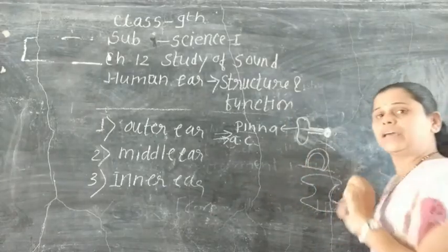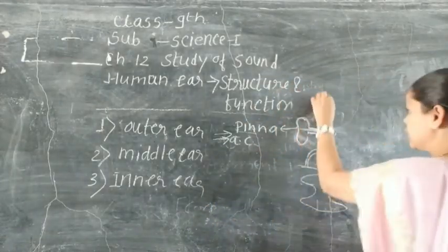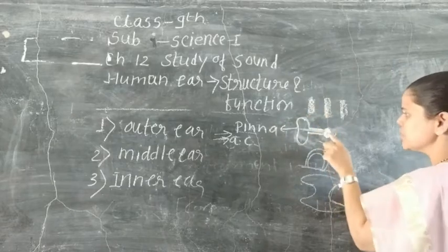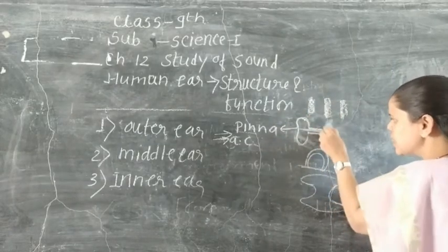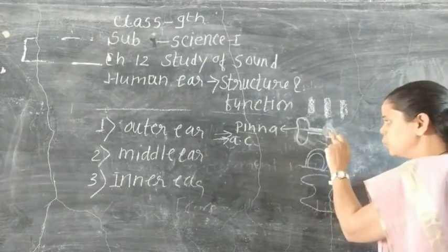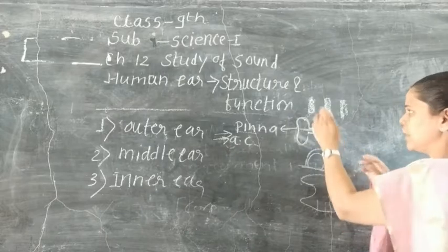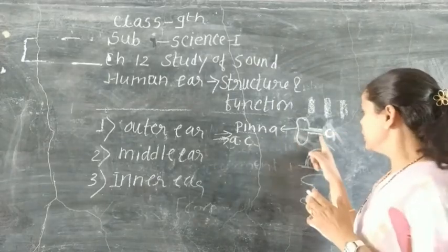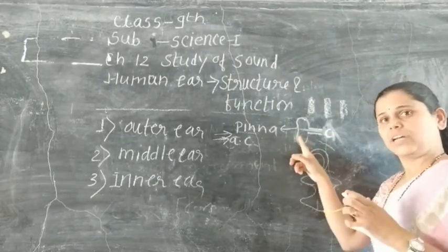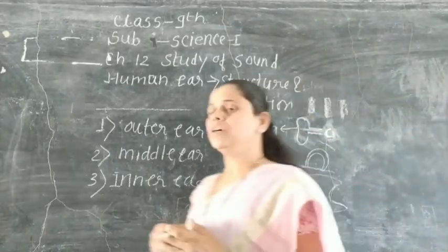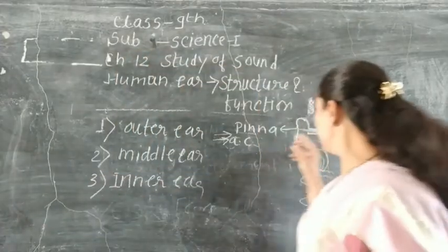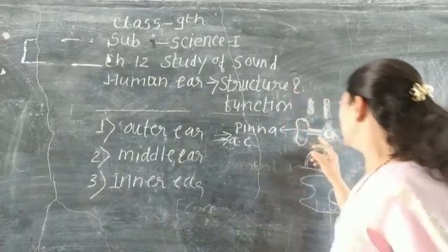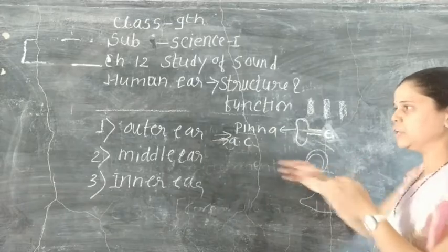Because of the vibration, in the sound waves there are compressions and rarefactions. When compression occurs, this membrane moves inward. This membrane moves like this. When rarefaction comes, this eardrum membrane vibrates. Because of this vibration, the sound waves enter into the middle ear.